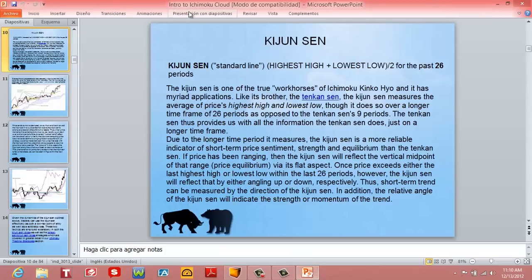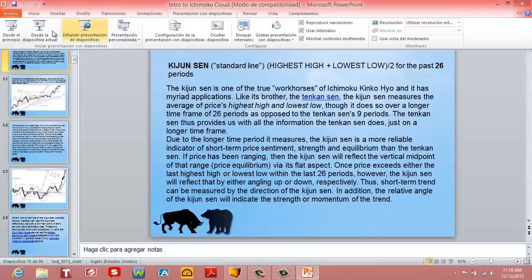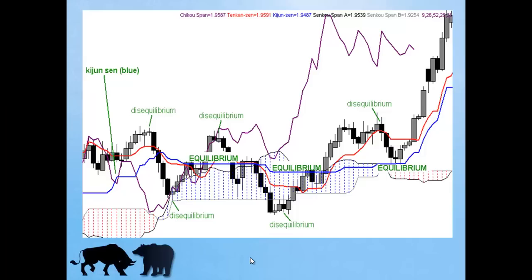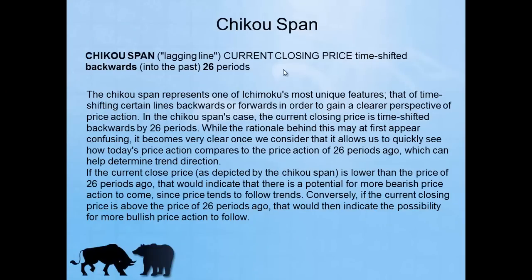The next line is called the Chikou Span. The Chikou Span is known as the lagging line. What it does is it takes the current closing price and time shifts it backwards for 26 periods. So what it's doing is comparing today's price with the price of 26 days ago.